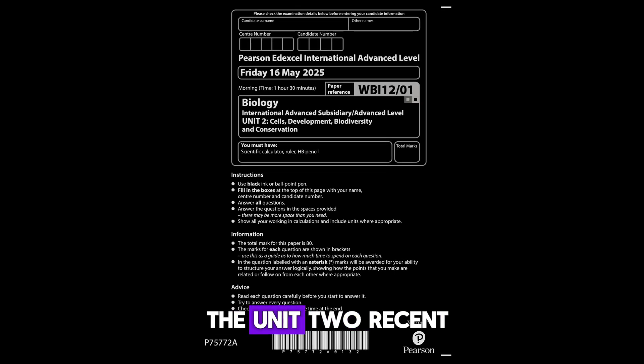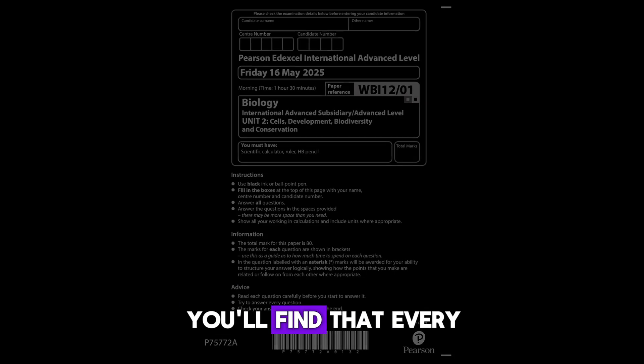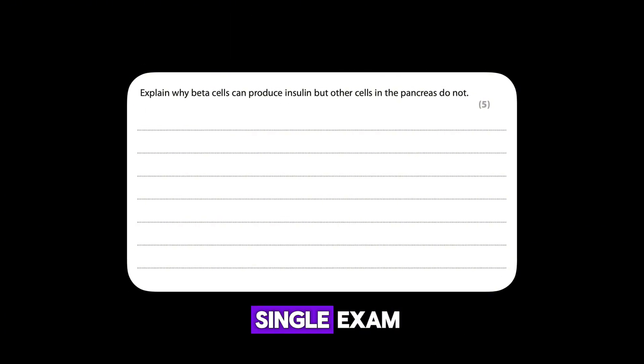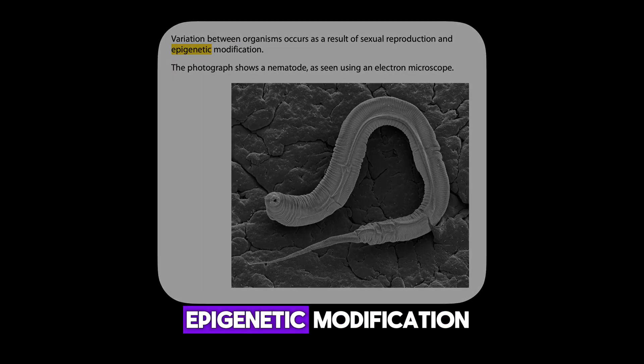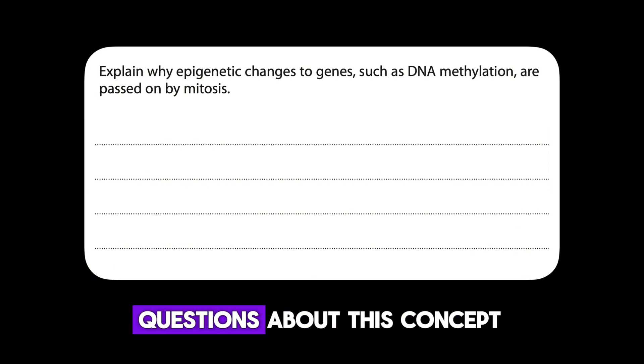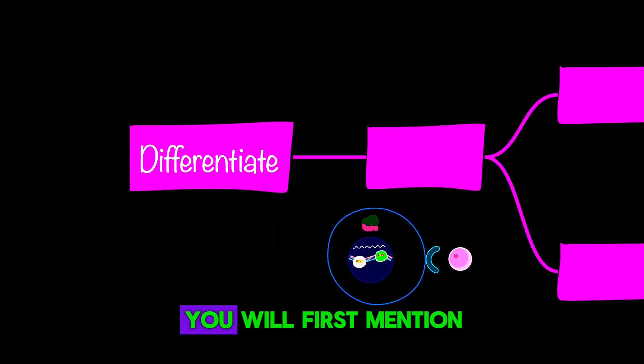If you look at the Unit 2 recent past papers, you'll find that every single exam has a question about epigenetic modification. Questions about this concept come for four, five, or sometimes six marks. How do you write the perfect answer?